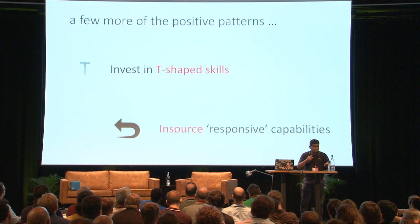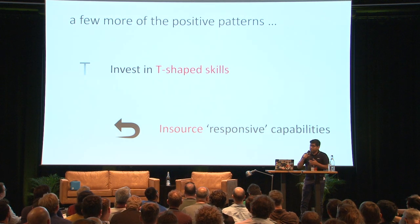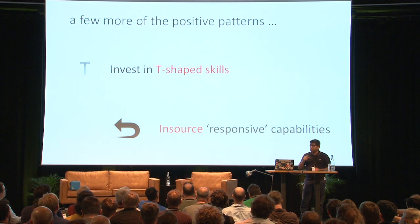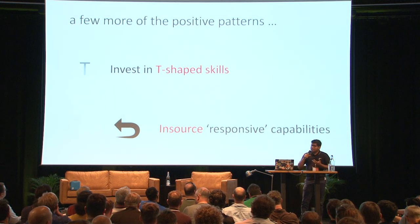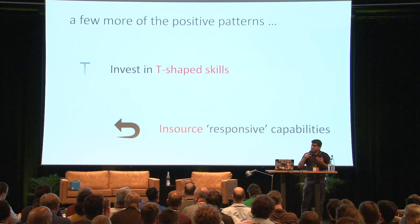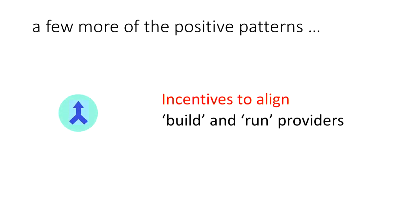Skills — as a lot of people have spoken about today — cross-functional skills, both from left to right: dev to QA to ops and so on. And of course insourcing some of the capabilities. There's a trend now to insource some of the critical and business-critical responsive capabilities.